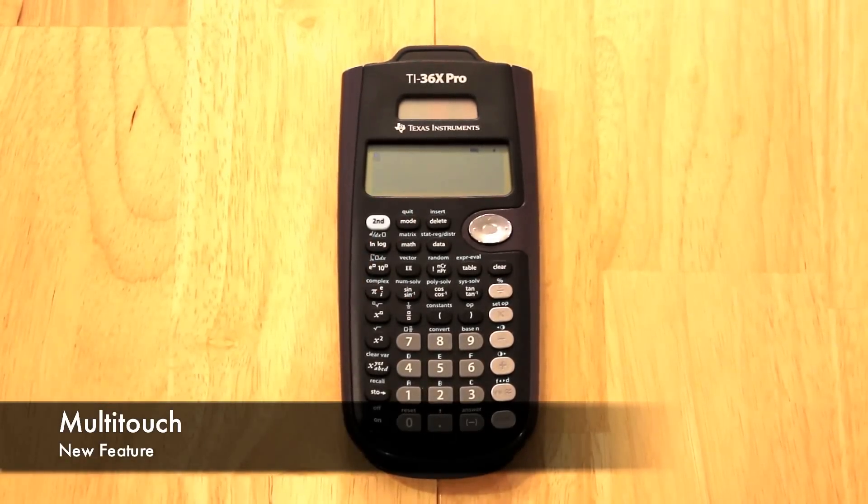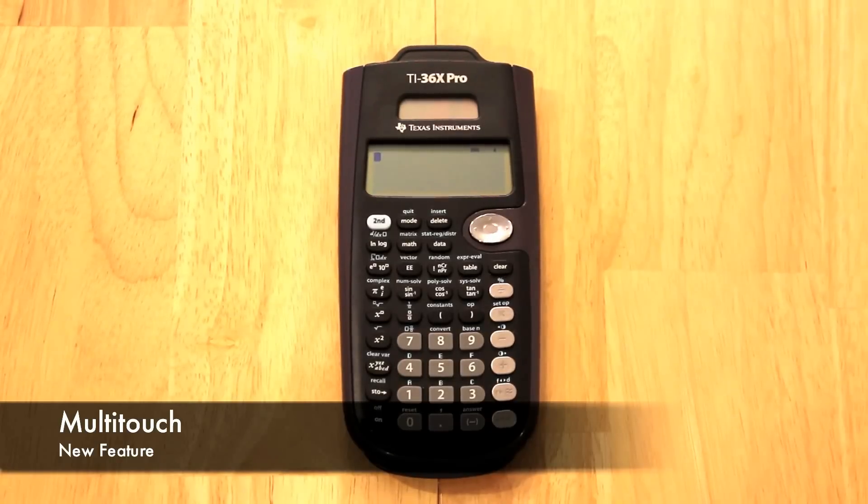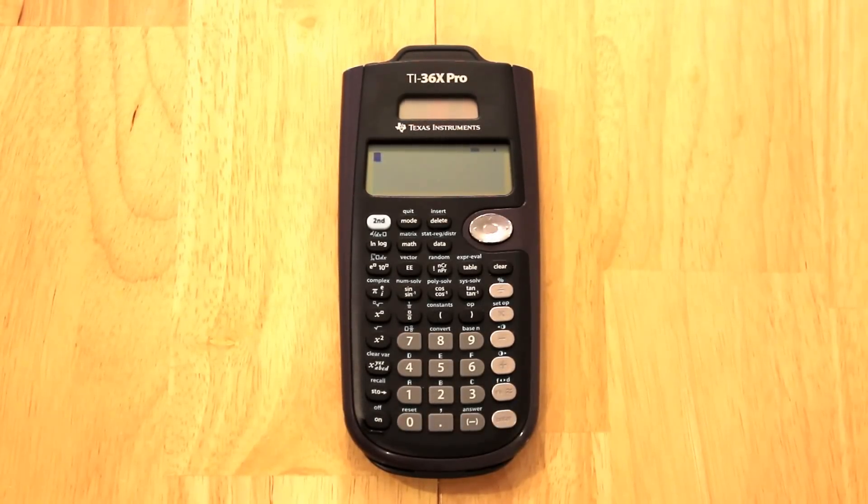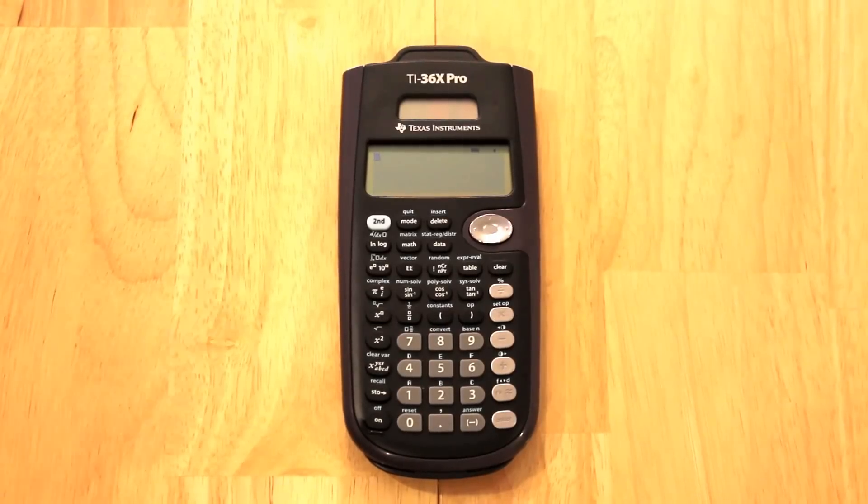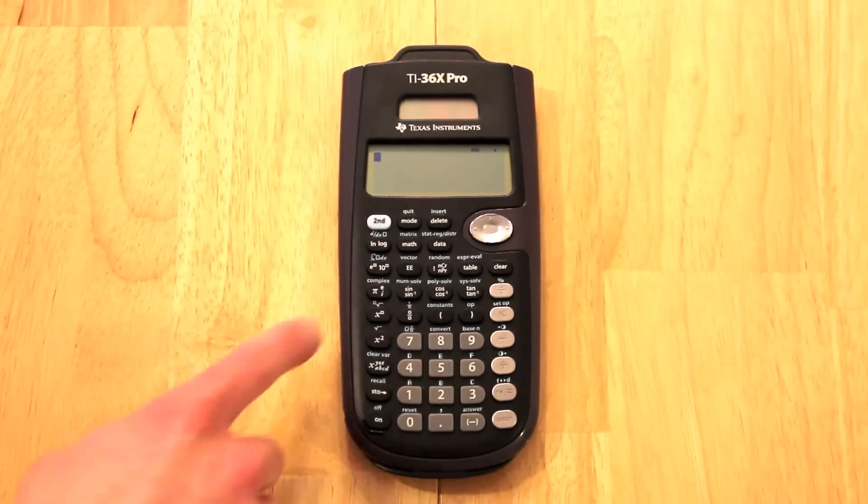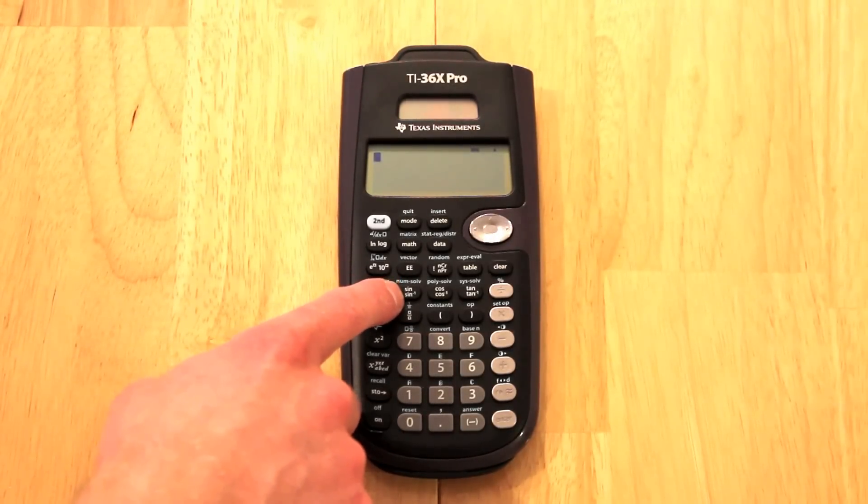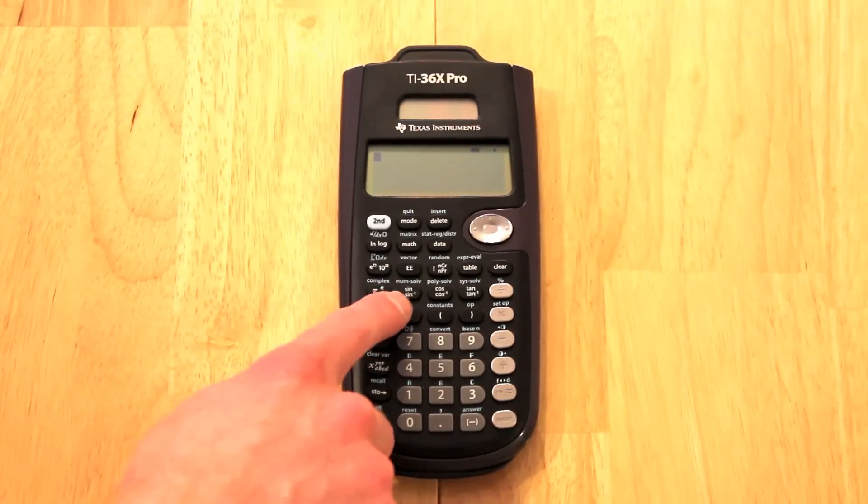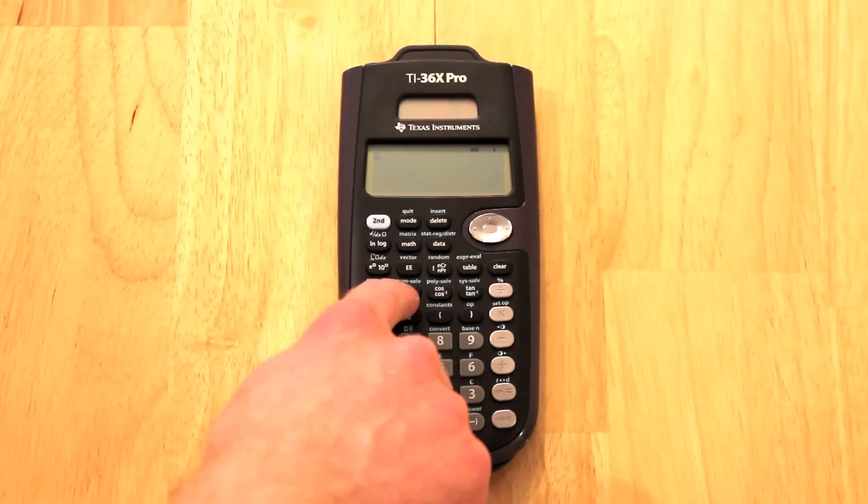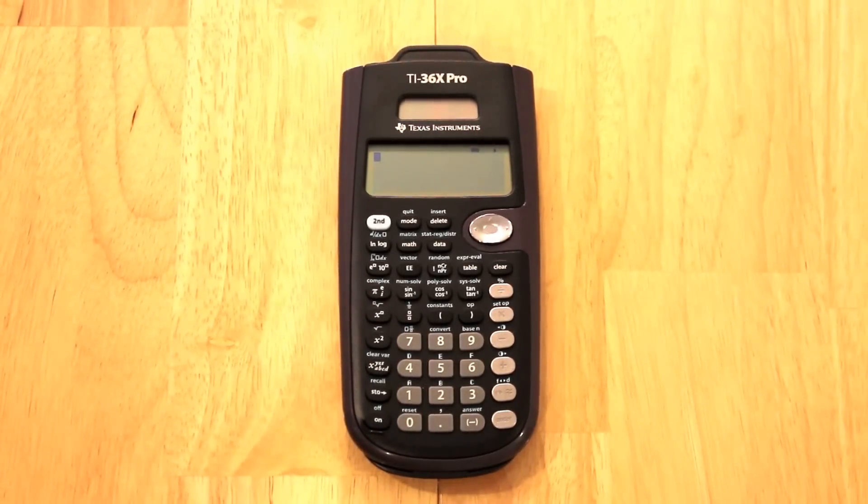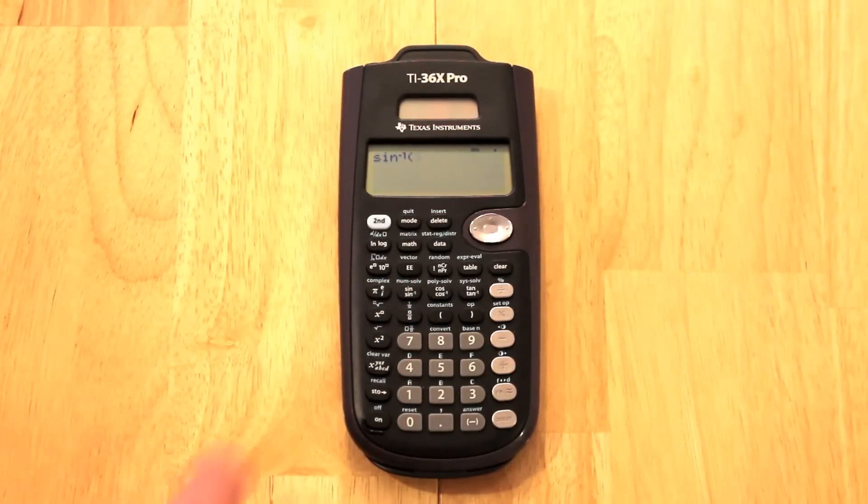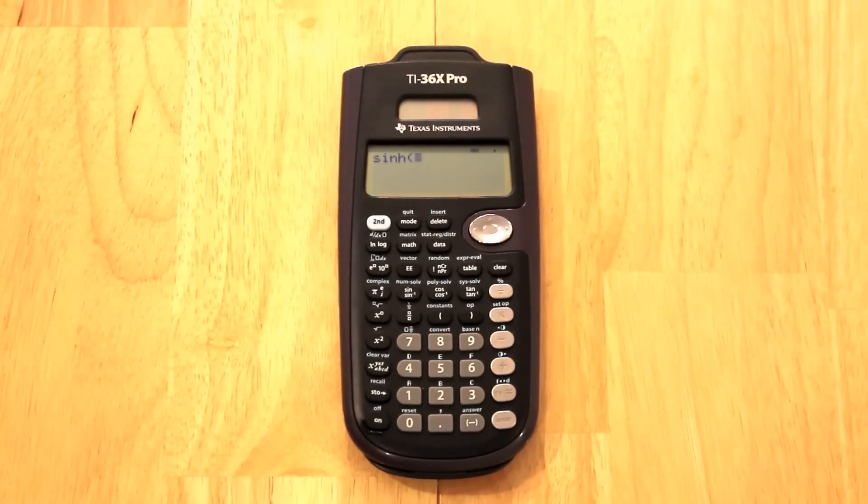One of the biggest new features on this calculator I like is what Texas Instruments calls the Multi-Touch. And what this is is you can touch the same button twice and get two different functions without using the second button. And I'll show you what I mean by this. If you look at the sine button, as you see, it says sine and inverse sine on the same button. But in blue print for the second button, it says numerical solver. So to show you what this means, if I hit sine once, I get the sine function. If I hit a second time, I get inverse sine, a third time, hyperbolic sine, and a fourth time, inverse hyperbolic sine. And a fifth time, I go back to sine.